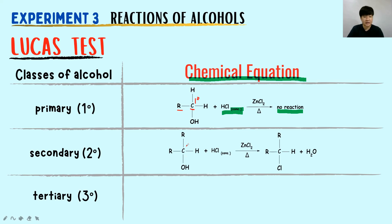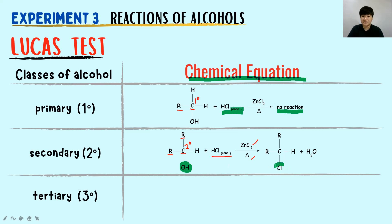For secondary alcohol, the carbon holding OH is a secondary carbon because it is attached to two carbon groups. You have concentrated hydrochloric acid with zinc chloride and heat in your Lucas test. The OH is substituted by Cl and H₂O is produced. The resulting alkyl halide is your cloudy solution.